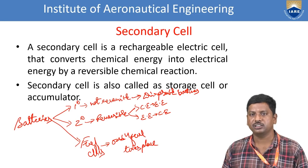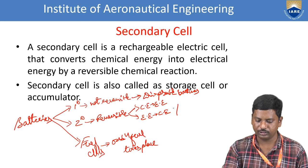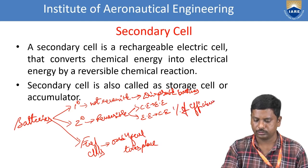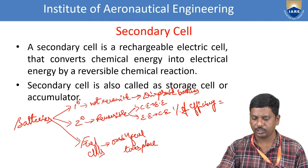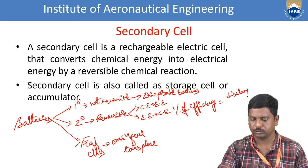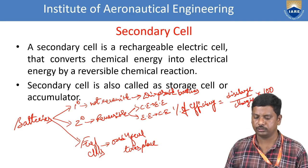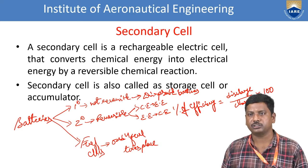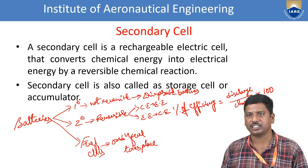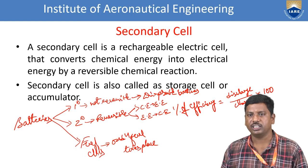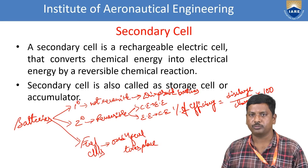Secondary cells can be used many times because charging and discharging are both possible. Based on this, we can calculate the percentage of efficiency of the battery. Percentage of efficiency equals discharge divided by charging, multiplied by 100. Fuel cells have no charging and discharging facility — only a one-side reaction is possible.